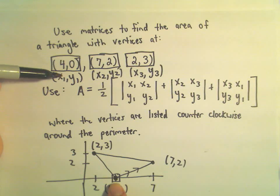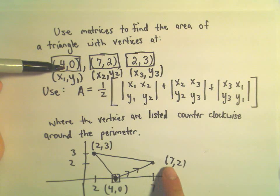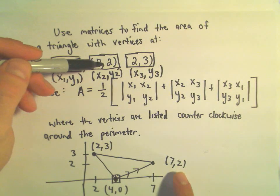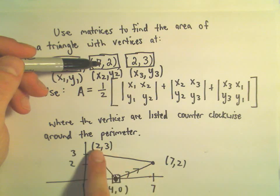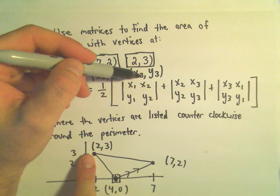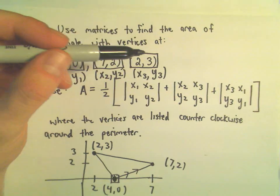So that's going to be my x₁,y₁, but then if we move to the right, our x₂,y₂ will be 7 and 2, and then if we keep following this counter-clockwise motion, x₃,y₃ will be the point 2 comma 3.